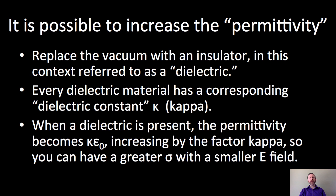Now, the permittivity of free space, you can't change it, but you can change the permittivity. All you've got to do is replace the vacuum with an insulator. In this context, we refer to that insulator as a dielectric. Every dielectric material has a corresponding dielectric constant kappa—that is not a K, this is a kappa. When a dielectric is present, the permittivity is no longer the permittivity of free space. The permittivity of whatever substance is in your field becomes kappa times epsilon-naught.